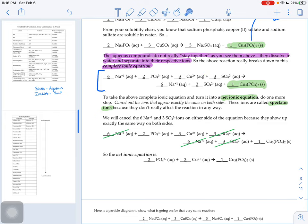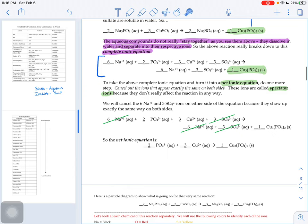They're the ones that are actually doing something during the course of the reaction. So we cancel out our spectators and whatever is left is called our net ionic equation.